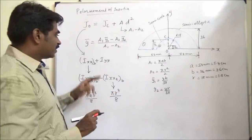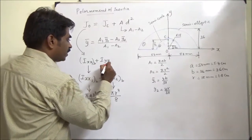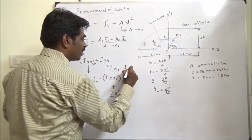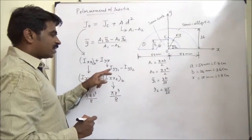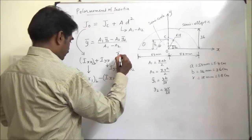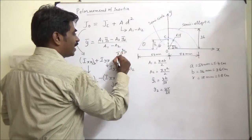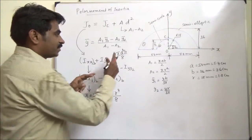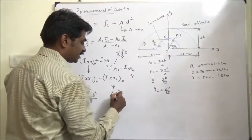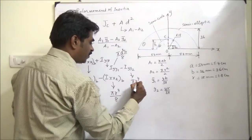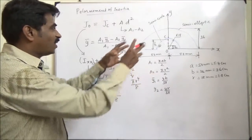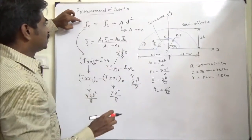Now, what is Iyy? It is nothing but Iyy1 minus Iyy2. Iyy1 is π·A³·B by 8. Now if you substitute all the values you will get J_O.